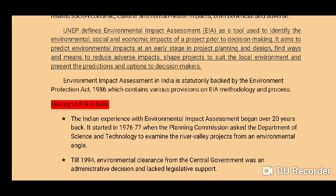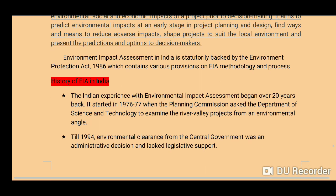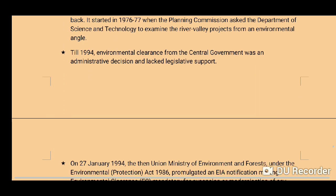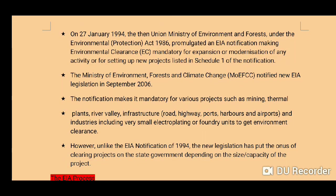The Indian experience with Environmental Impact Assessment began over 20 years back. It started in 1976-77 when the Planning Commission asked the Department of Science and Technology to examine river valley projects from an environmental angle. Till 1994, environmental clearance from the central government was an administrative decision and lacked legislative support.